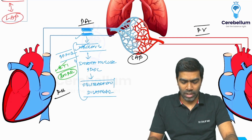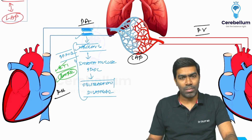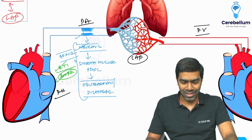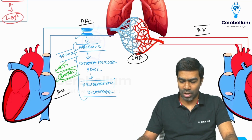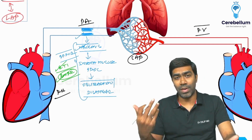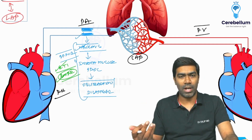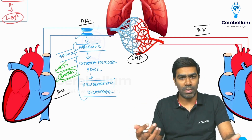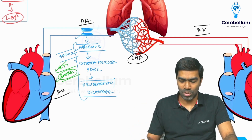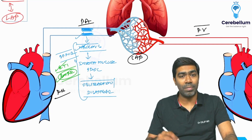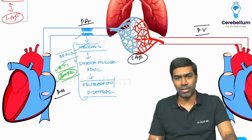BMPR — bone morphogenic protein receptor — is important for diagnosis, especially for familial pulmonary artery hypertension and idiopathic pulmonary artery hypertension. Most of these patients are going to have BMPR mutations.